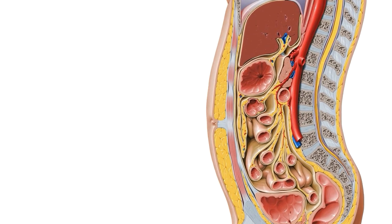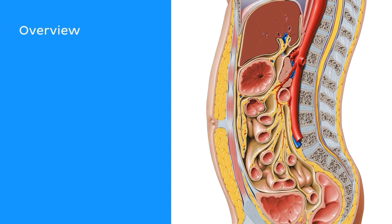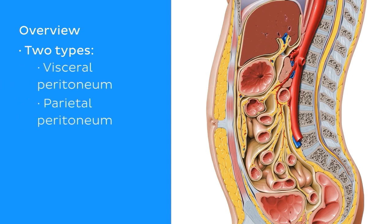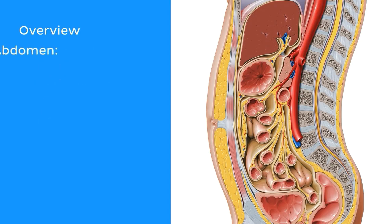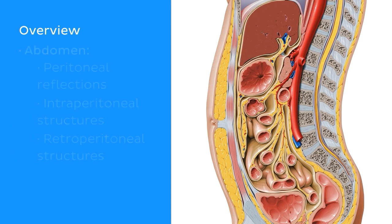To begin, here's a quick overview. We'll start by distinguishing the two types of peritoneum — the visceral peritoneum and the parietal peritoneum — and describe their interactions with organs. We will also discuss the borders and structures of the abdomen and pelvis as they relate to the peritoneum. In the abdomen, we'll look at the peritoneal reflections, the intraperitoneal structures, and the retroperitoneal structures.